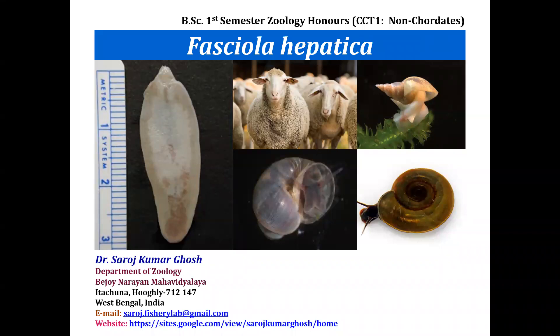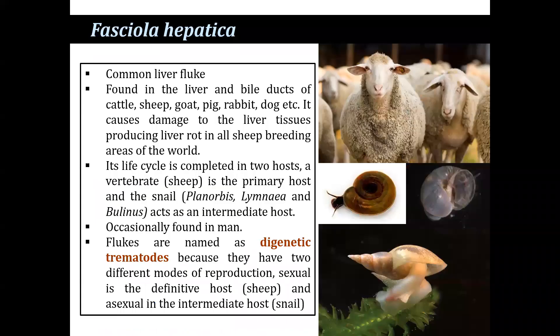Welcome back, dear students. I am going to discuss the topic: life cycle, pathogenicity, and control measures of Fasciola hepatica. Fasciola hepatica is a common liver fluke found in the liver and bile ducts of cattle, sheep, goat, pig, rabbit, dog, etc. It causes damage to the liver tissue, producing liver rot in all sheep-breeding areas of the world.